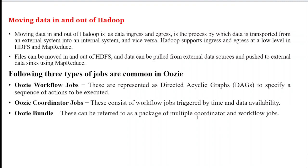How is data transported from external systems? External systems means there are multiple sources where we can feed our data into Hadoop — for example, CSV files, normal text files, Google BigQuery, Pentaho BI, or normal tab-delimited files. From many applications we can take data and send it to Hadoop. Hadoop supports ingress and egress mechanisms in HDFS as well as in MapReduce.